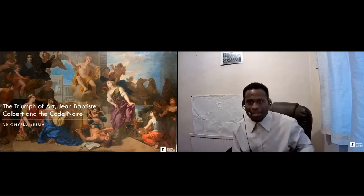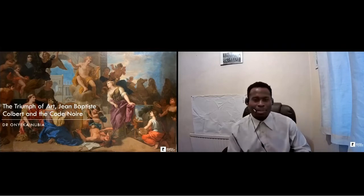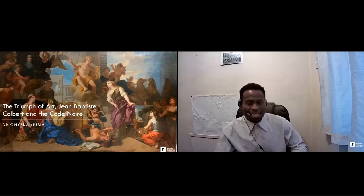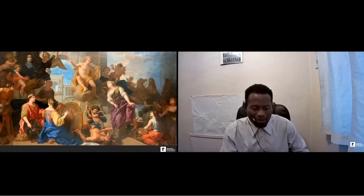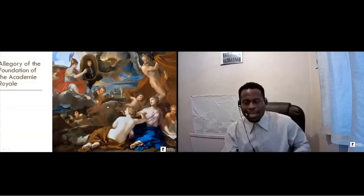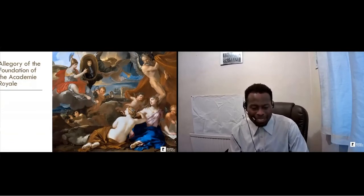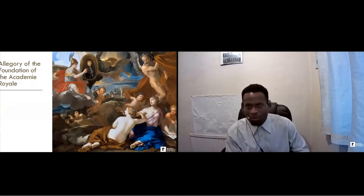Loire was a French painter and engraver who used to paint religious and historical images. He travelled to Italy in the 1640s where he studied the work of a fellow French artist called Nicolas Poussin. And whilst he was undergoing these travels, he also painted this very interesting painting called the Allegory of the Foundation of the Academy Royale.